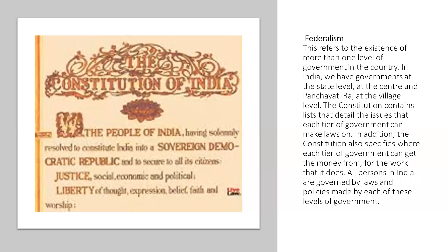Federalism refers to the existence of more than one level of government in the country. In India, we have governments at the state level, at the center, and at the Panchayati Raj in the village. The constitution contains lists that detail the issues that each tier of the government can make laws on. The constitution also specifies where each tier of government can get the money from for the work that it does. All persons in India are governed by laws and policies made by each of these levels of government. Federalism is essentially the segregation of government at each level.